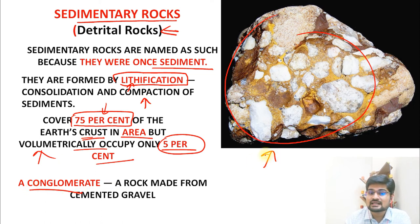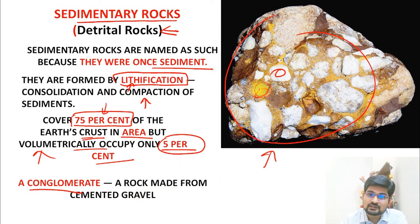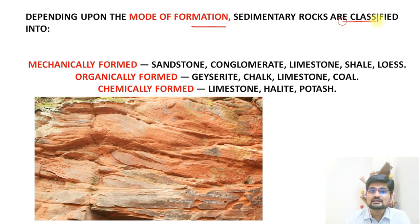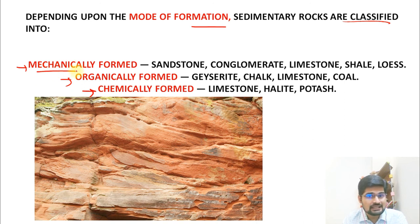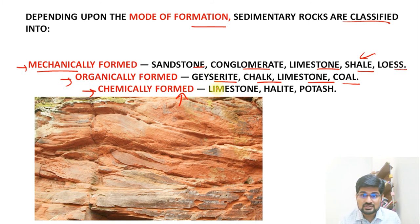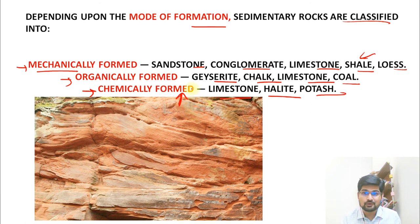Conglomerate is a combination of different gravels and pebbles fused together into a single cemented rock through lithification. Depending on mode of formation, sedimentary rocks are classified into three types: mechanically formed (sandstone, conglomerate, limestone, shale, loess), organically formed (gizzarite, chalk, limestone, coal — containing organic remains), and chemically formed (halite, potash, limestone). Limestone can be both organically and chemically formed.